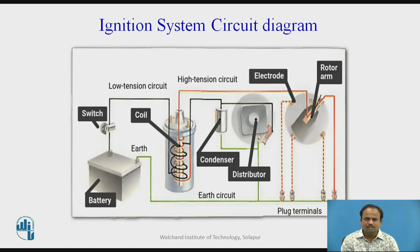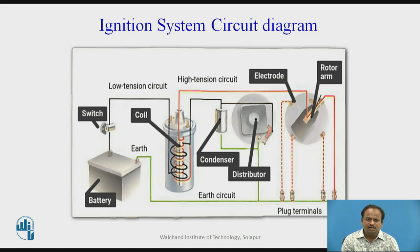This is the ignition system circuit diagram, in which the switch is located, there is a battery, then there is a coil, a high-tension circuit indicated with the blue wire, a condenser unit, the distributor, the electrodes, the rotor arm, and the plug terminals.